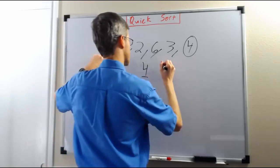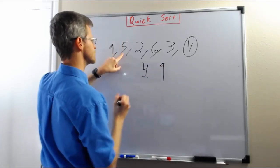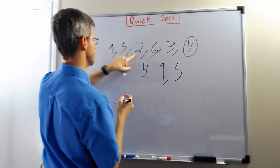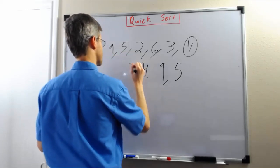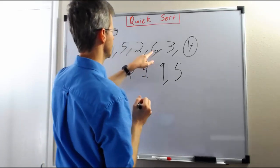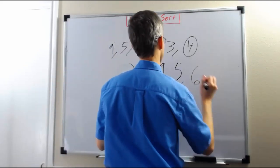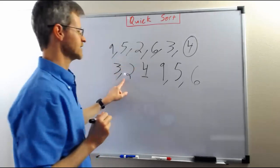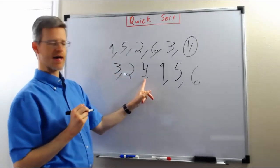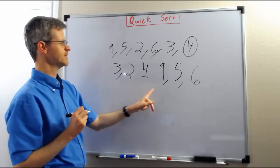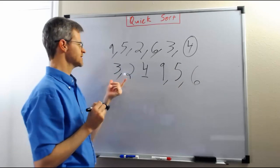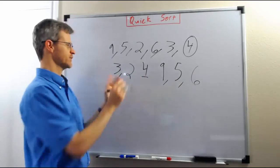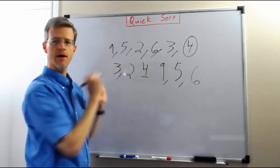9 is greater than 4, so we're going to put it after the 4. 5 is greater than 4, so we also put it after the 4 — after the 9, because the 9 is already there. 2 is less than 4, so we put 2 in front of the 4. 6 is greater than 4, so we put it in the list of things greater than 4. Now we have our pivot, values less than our pivot, and values greater than our pivot — three pieces that are sorted with respect to each other but not internally.